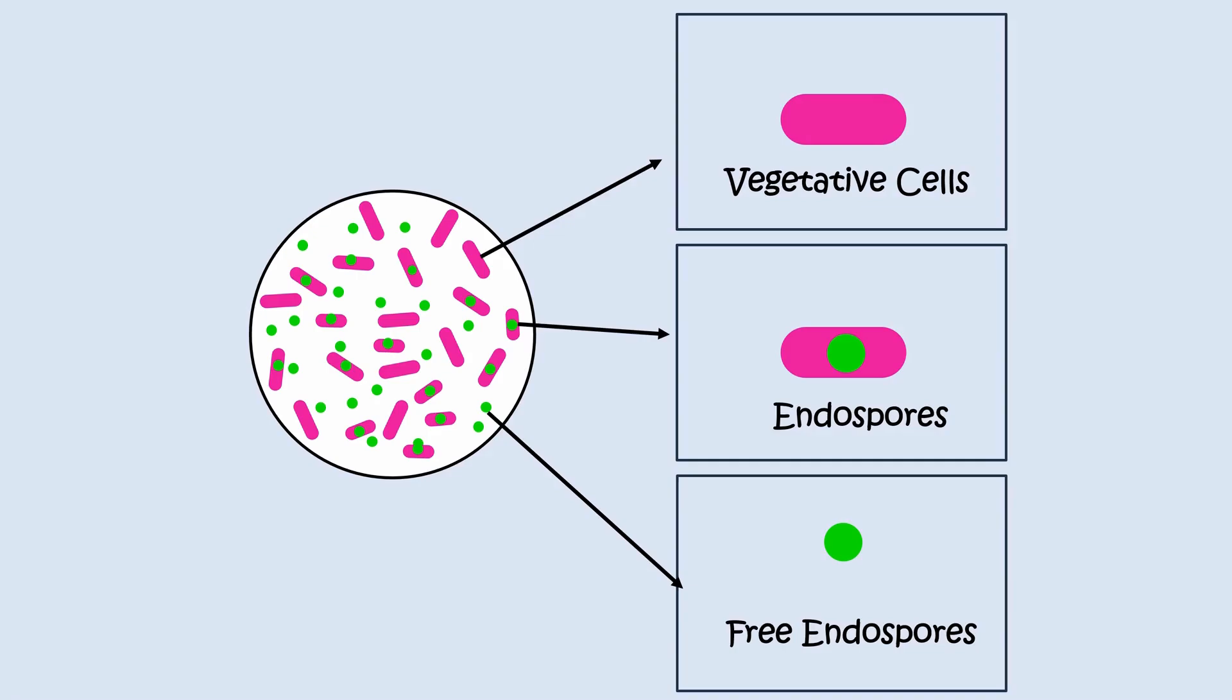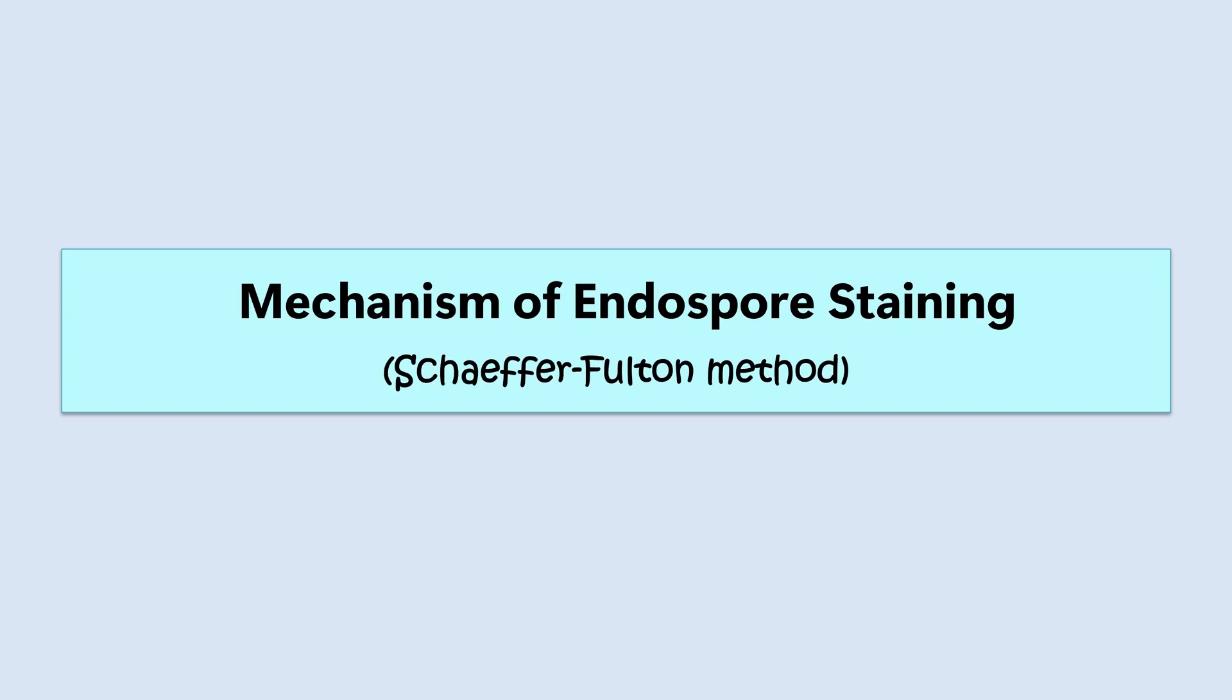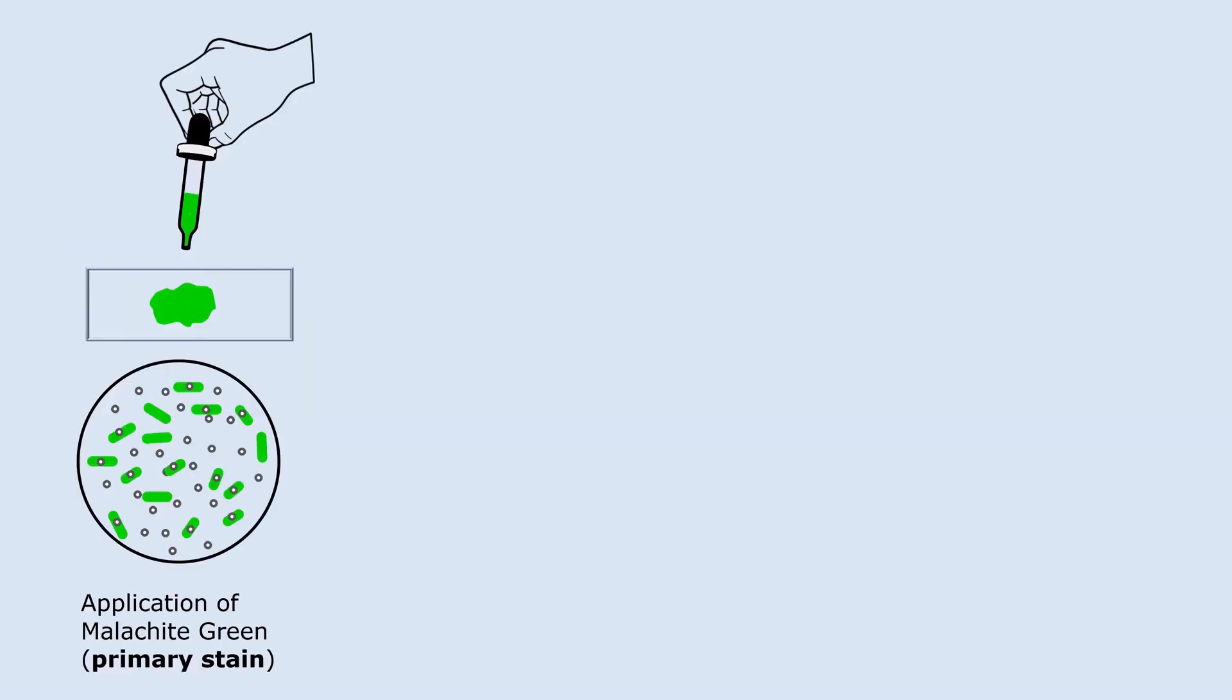Now we have completed the staining procedure. Let's quickly understand the science behind it: the mechanism of endospore staining. When malachite green, the primary stain, is applied at room temperature, vegetative cells absorb it easily and appear green.